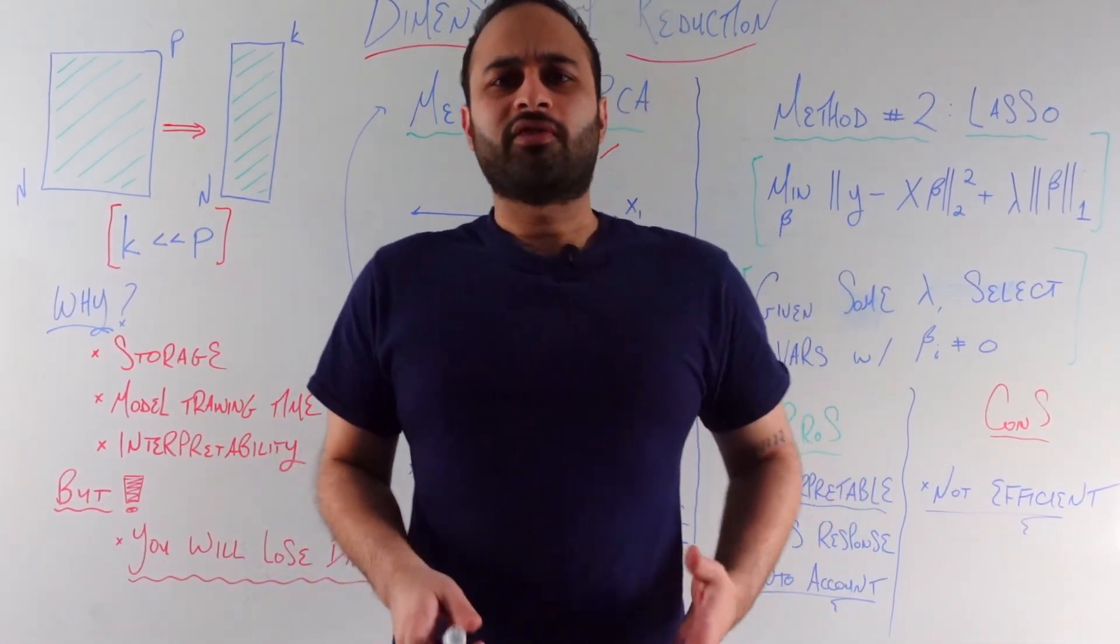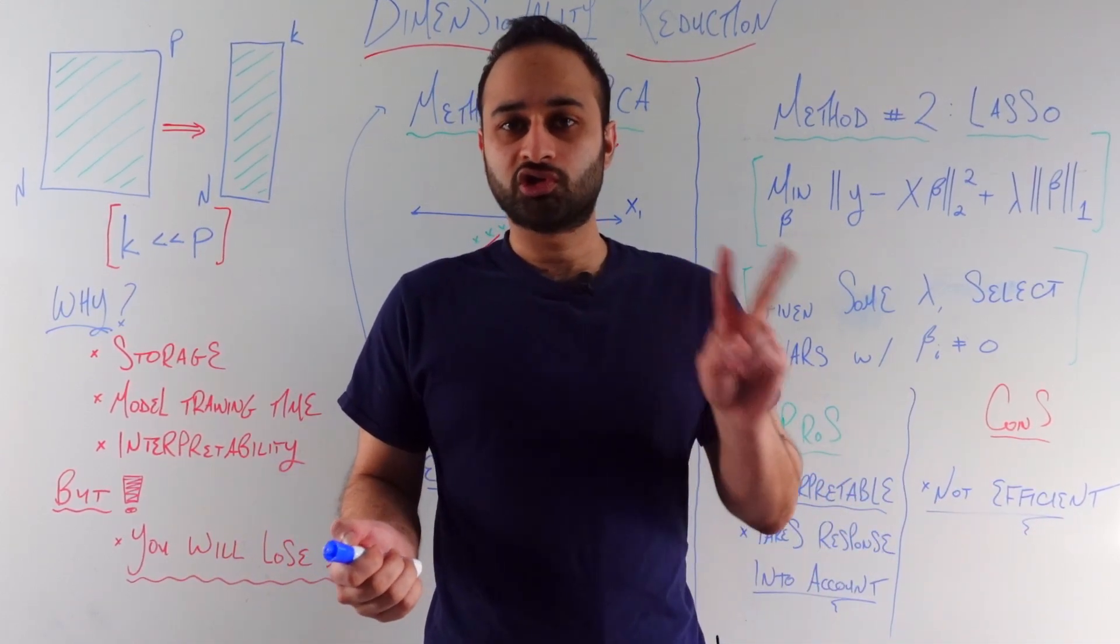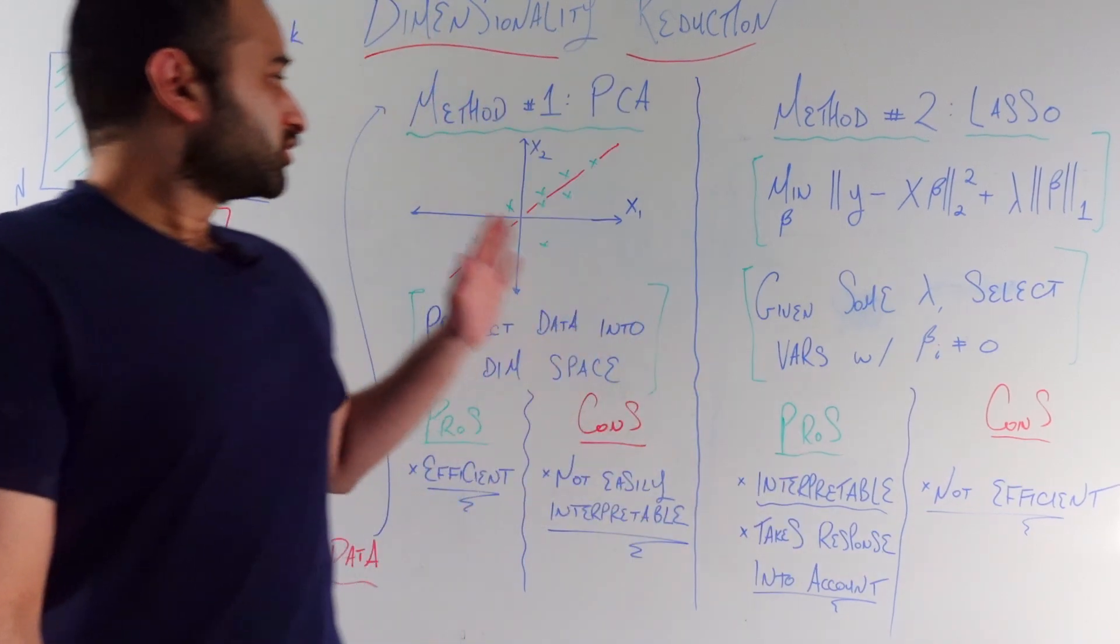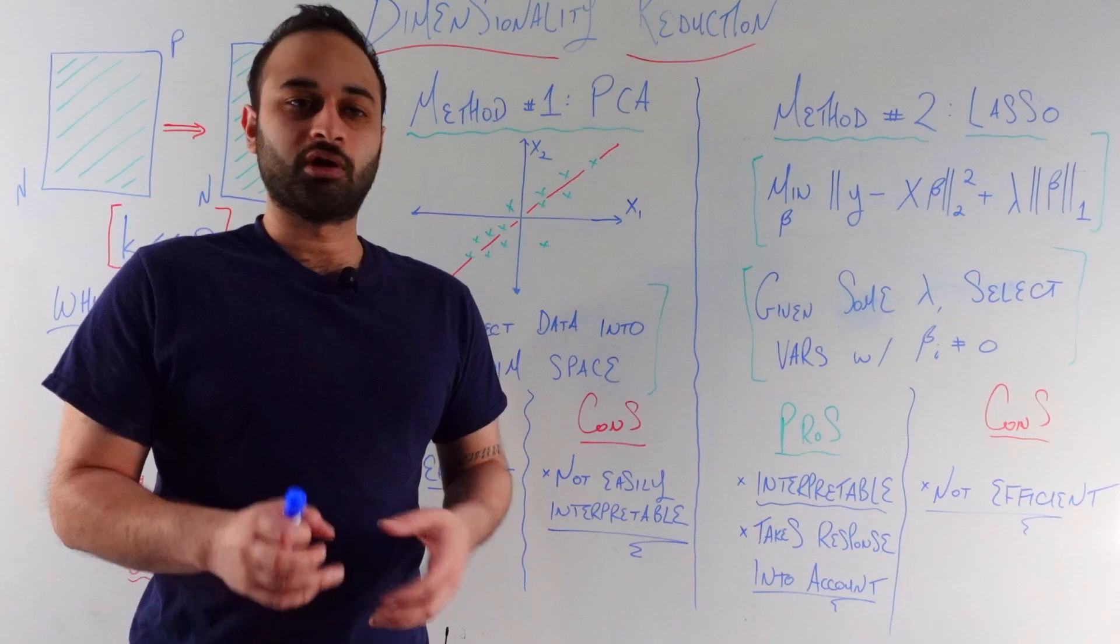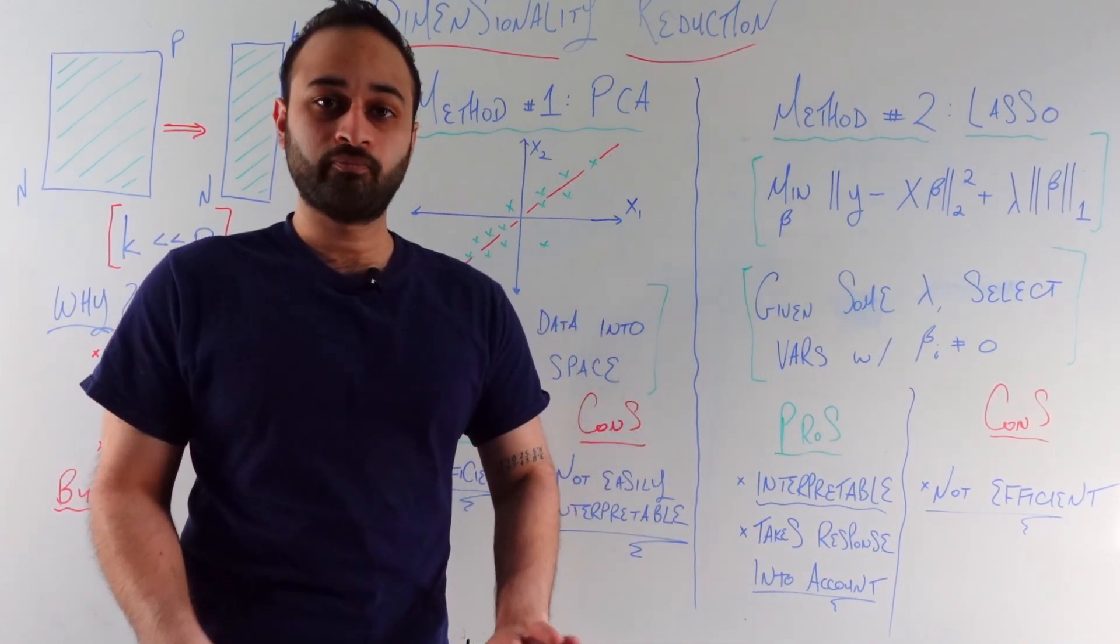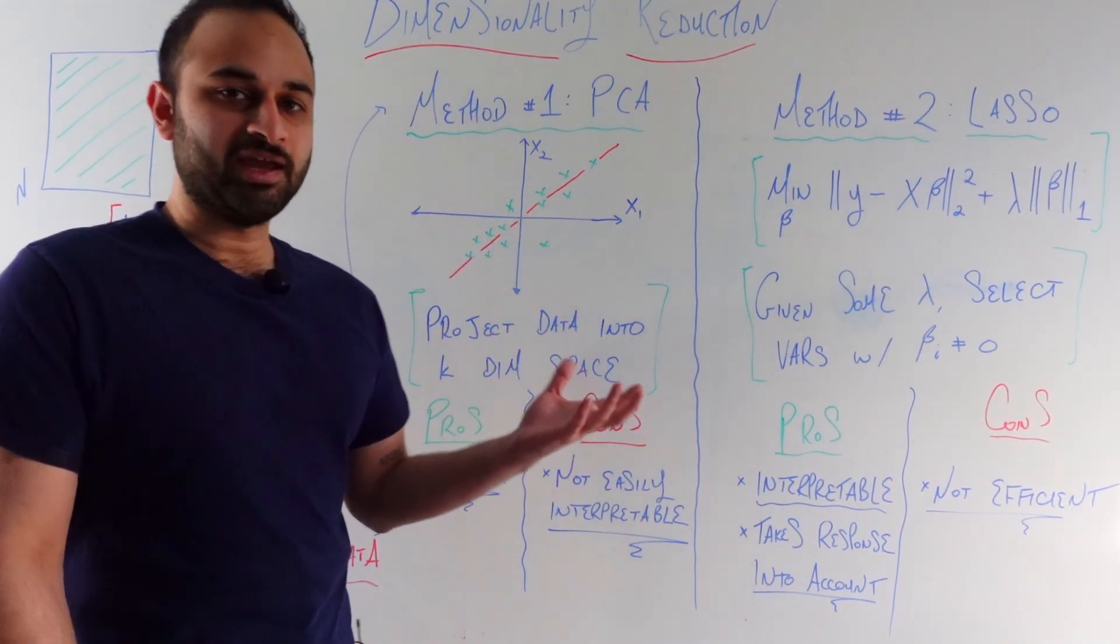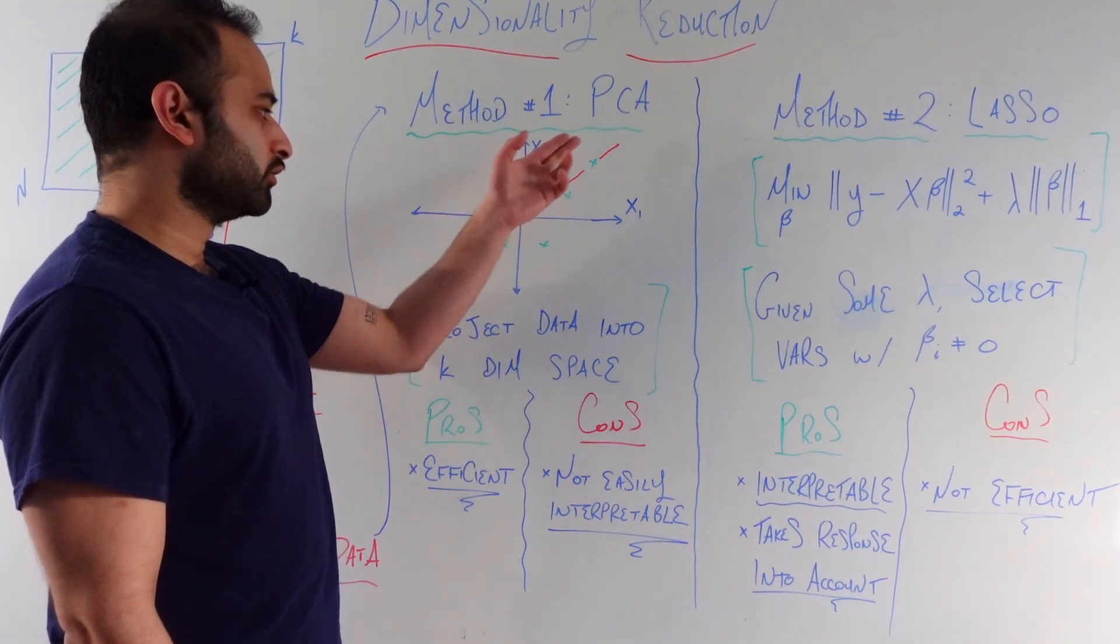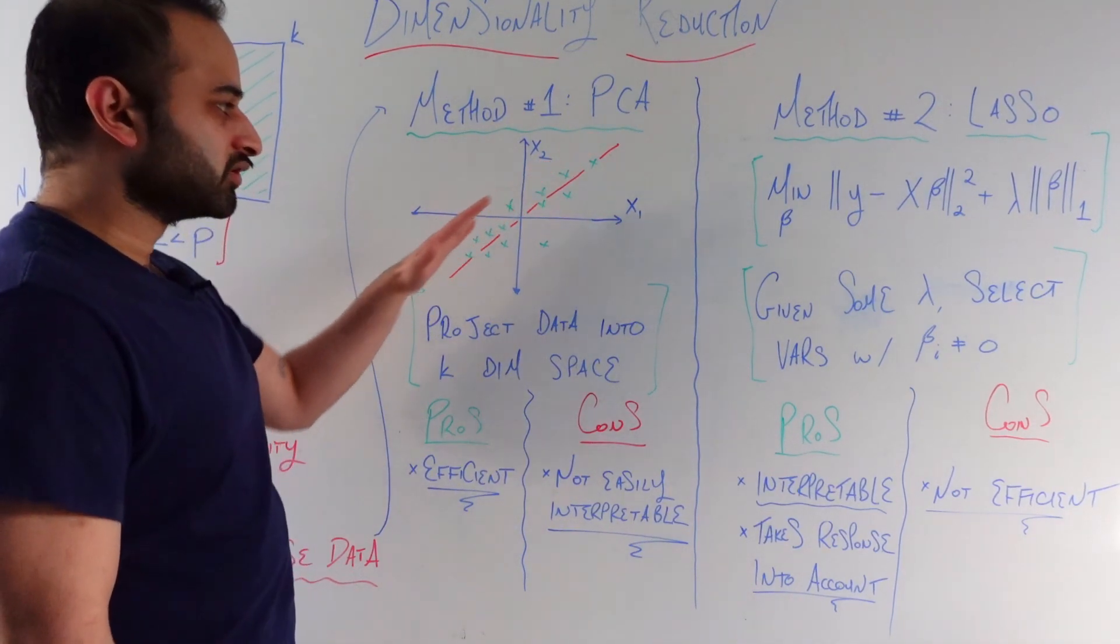Let's talk about two methods to do dimensionality reduction. There are many out there, but I want to go over two intro methods that you'll probably learn early on during your studies in machine learning. The first one is called PCA, or principal components analysis. Now this is not a video where I'm going to go into all the depth of PCA. I have videos on that which I'll link in the description below. But just to remind you, here's a very common picture you see during PCA. You might have some two-dimensional data, x1, x2 coordinates, and all these green x's are your data points. You can see they more or less line up along this red line.